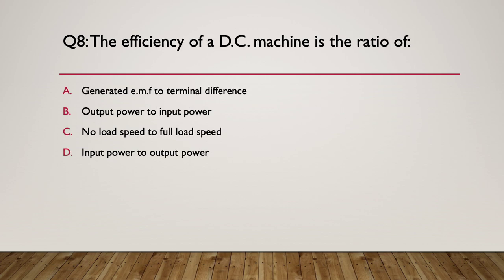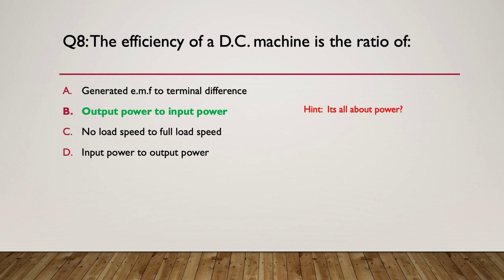Question eight: the efficiency of a DC machine is the ratio of what? A: the generated EMF to the terminal volts difference. B: the output to the input power. C: the no-load speed to the full load speed. Or D: the input power to the output power. Pause here. When we're talking about efficiency, it's all about power. It's a matter of just getting the ratio the right way around — it's the ratio of the output power to the input power. Be careful you didn't choose D, which was input power to output power. It's the other way around: output power compared to input power.